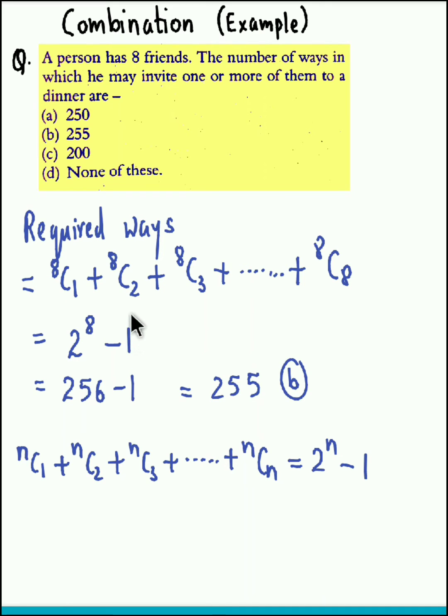So we have 8C1, 8C2, 8C3 up to 8C8. Using this formula, this gives 2 raised to 8 minus 1, which is 256 minus 1, so the answer is 255, option B.